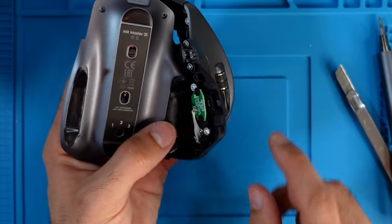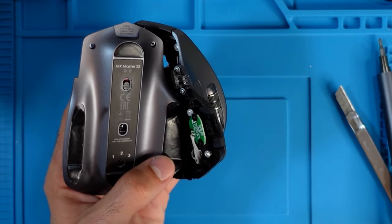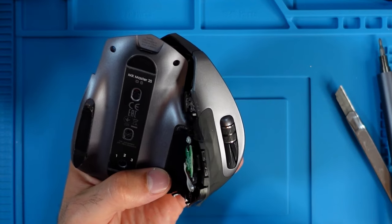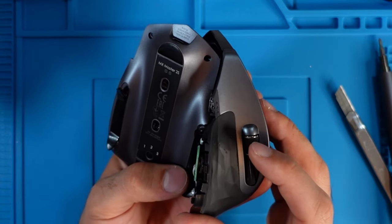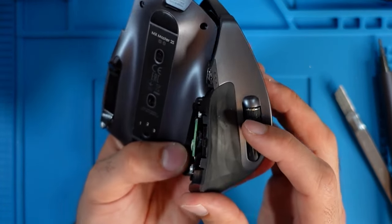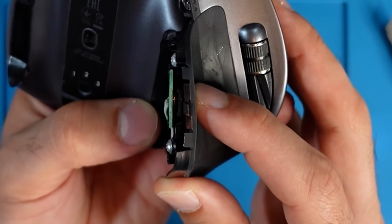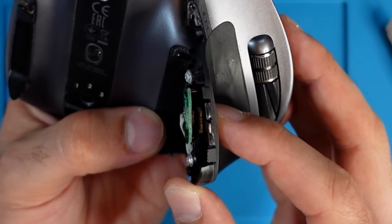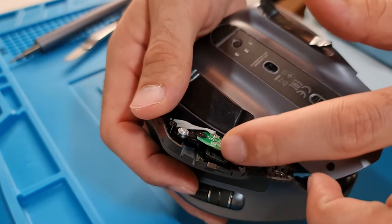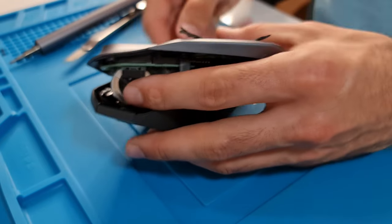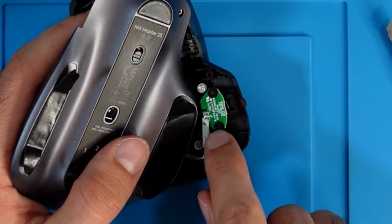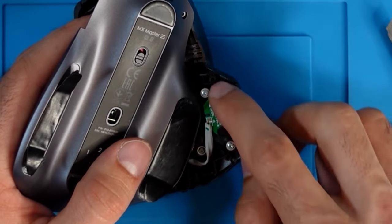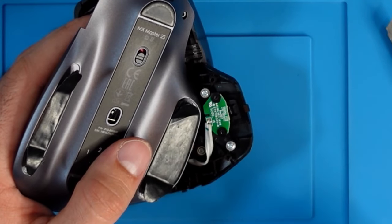All we care about is this small circuit here, which actually is just holding the thumb button in place. There is a tiny, tiny button there. Anyway, all you need to do really is to loosen up just a little bit these two black crossed screws.